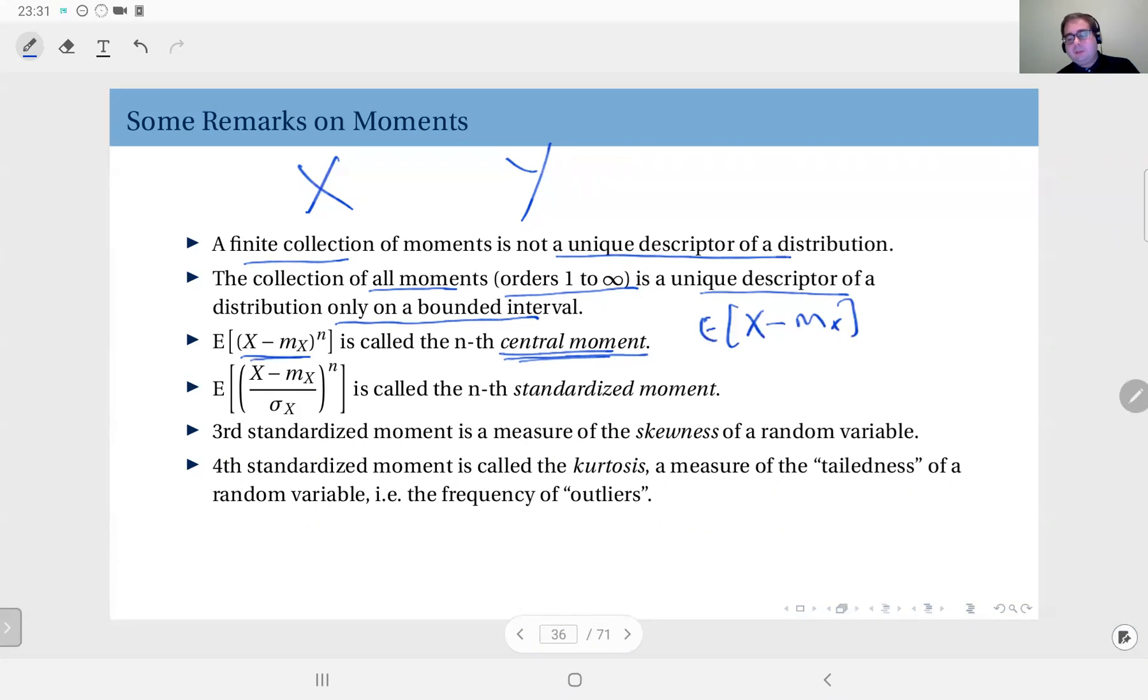And as I mentioned earlier, expectation is linear, and since this is a constant value, I can take it out to obtain expected value of X minus mean of X, which is zero for any distribution.